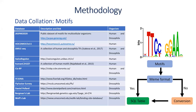Starting with our methodology, first we collected motifs from different sources and publications — mostly Drosophila data, specifically new data not already available in the platform. We collected Drosophila data from the databases listed here. For the human data, we collected from previously used databases that have been updated, and also from databases not previously included. Motifs were collected in different formats, but our main format is MEME format. If a motif was not in MEME format, we converted it using custom scripts or the MEME suite. After conversion, the motifs were stored in an SQL table.